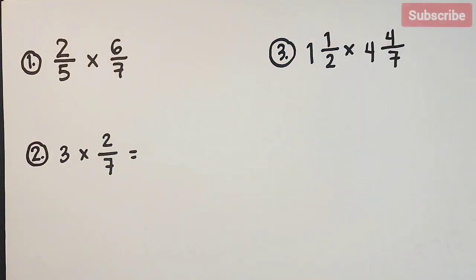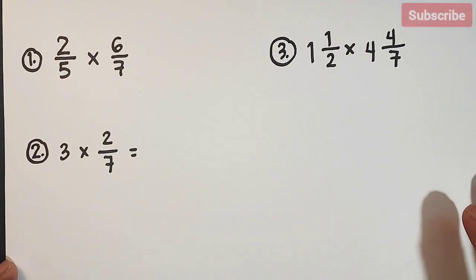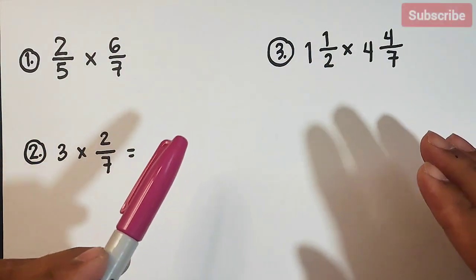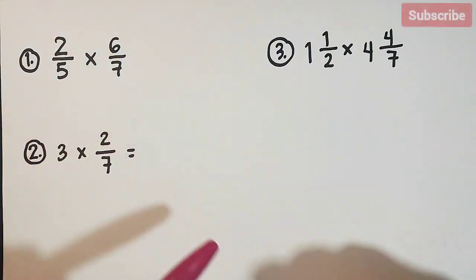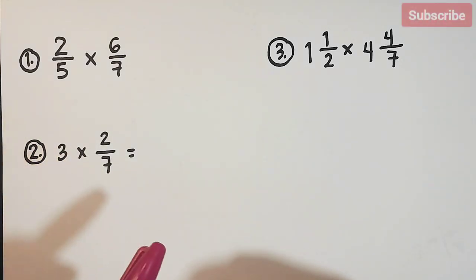Now here are the three examples that we have for this video, and later on I will give you an activity wherein you will multiply fractions. So by the way guys, before we start, how do we multiply fractions? We are multiplying fractions by multiplying the numerator and numerator, denominator and denominator, and then at the end of that we will express our final answer in lowest terms.